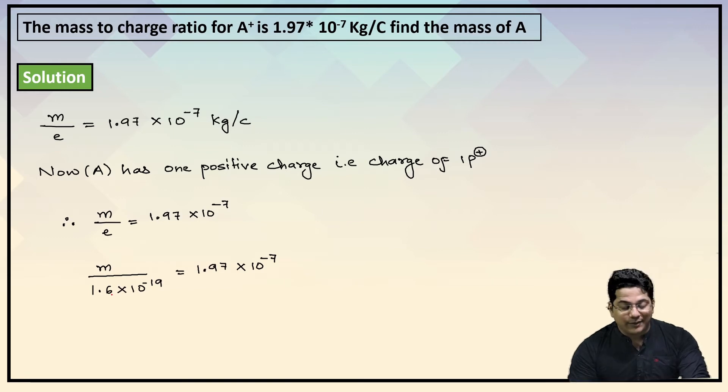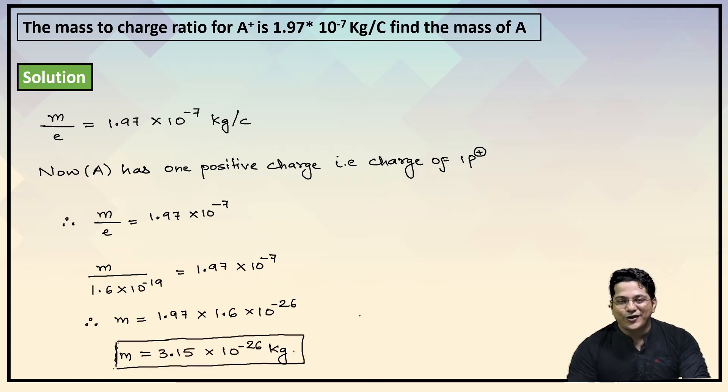We have mass upon 1.6 × 10⁻¹⁹ equals 1.97 × 10⁻⁷. If you multiply, therefore mass equals 1.97 × 1.6 × 10⁻²⁶, and the answer comes out to be mass equals 3.15 × 10⁻²⁶ kg.